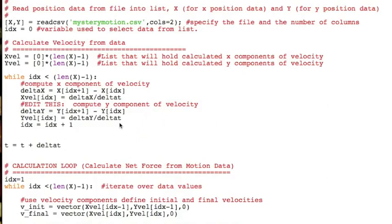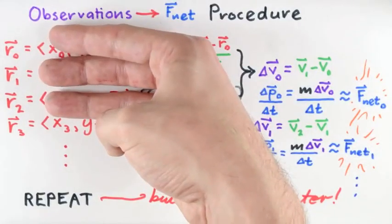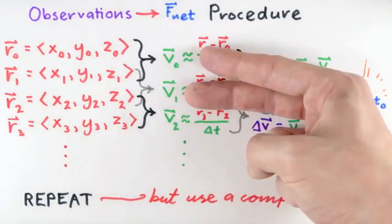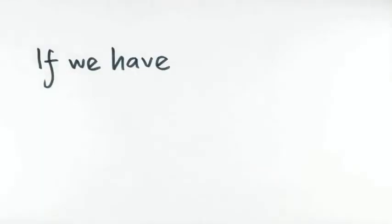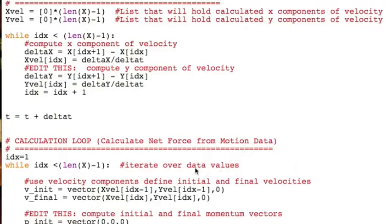Second, we also notice that for each velocity estimate made this way, two different position data points are needed. You'll recall we said earlier in this lecture that we need three position data points to calculate two velocities. What that means in general is that for a given number of position data points, the number of velocity estimates will be one fewer. For that reason, we defined our lists for velocity components to have one fewer entry than the number of position components. We determine the number of position components from the x list using the Python function len.